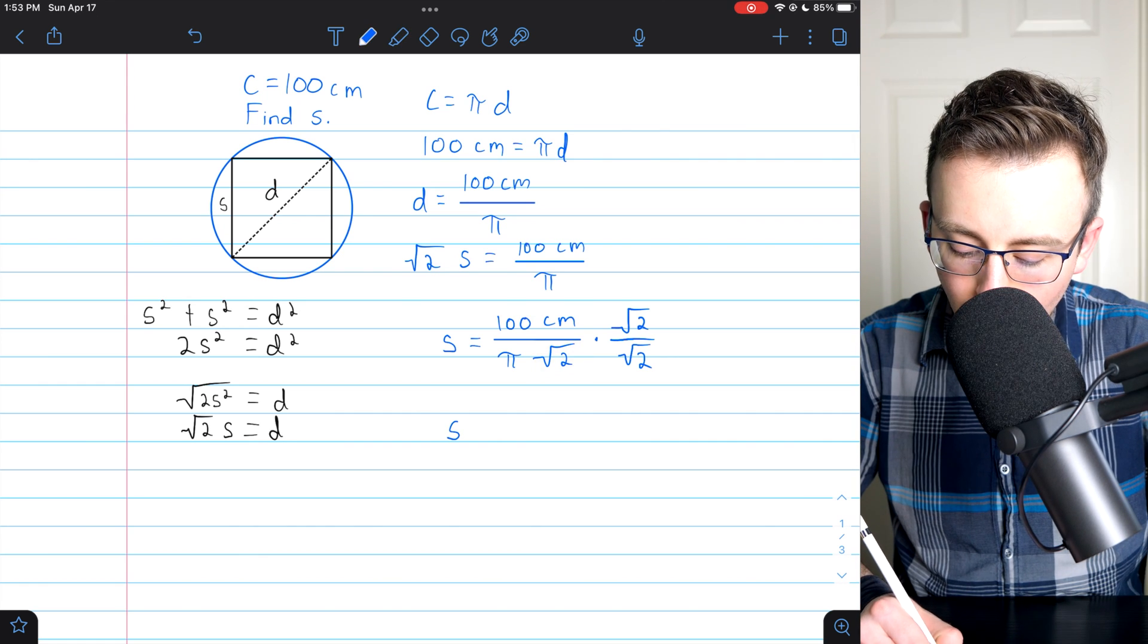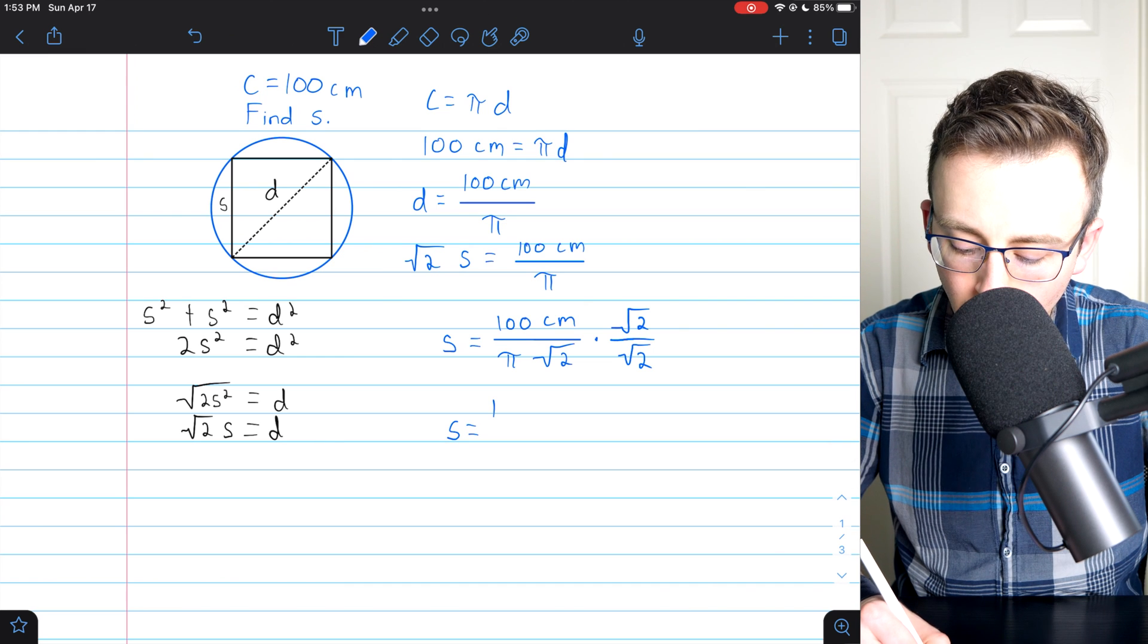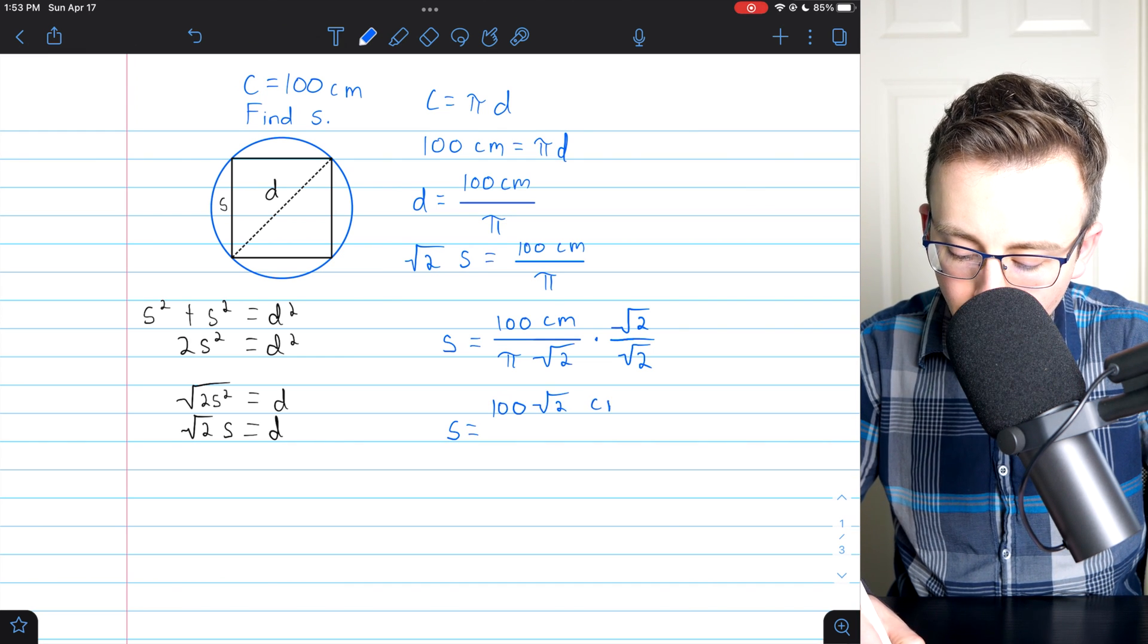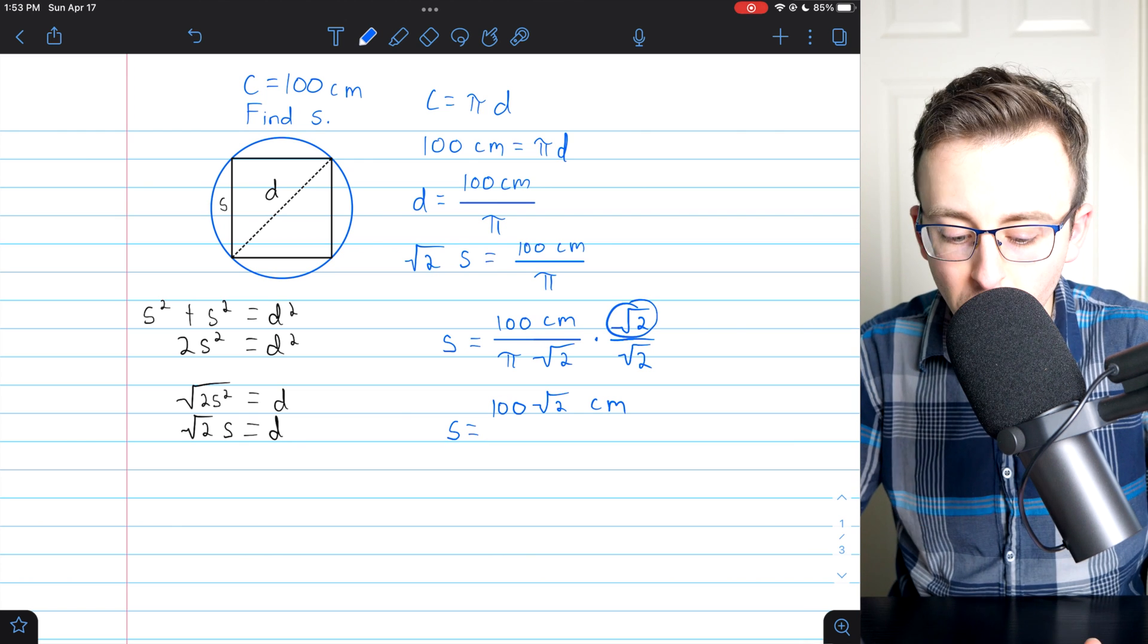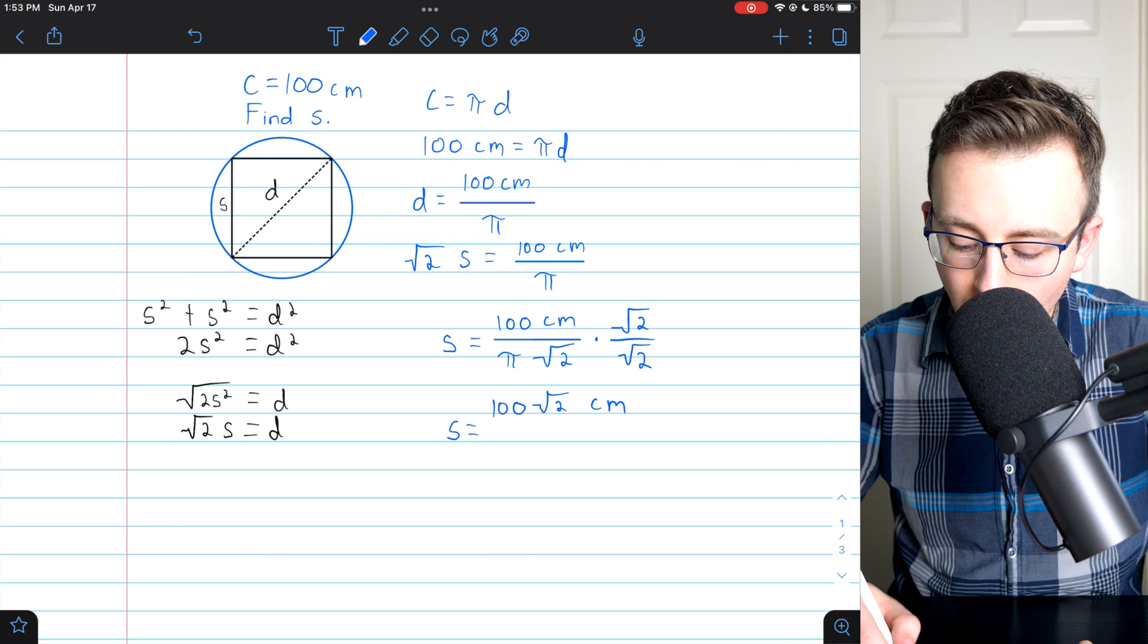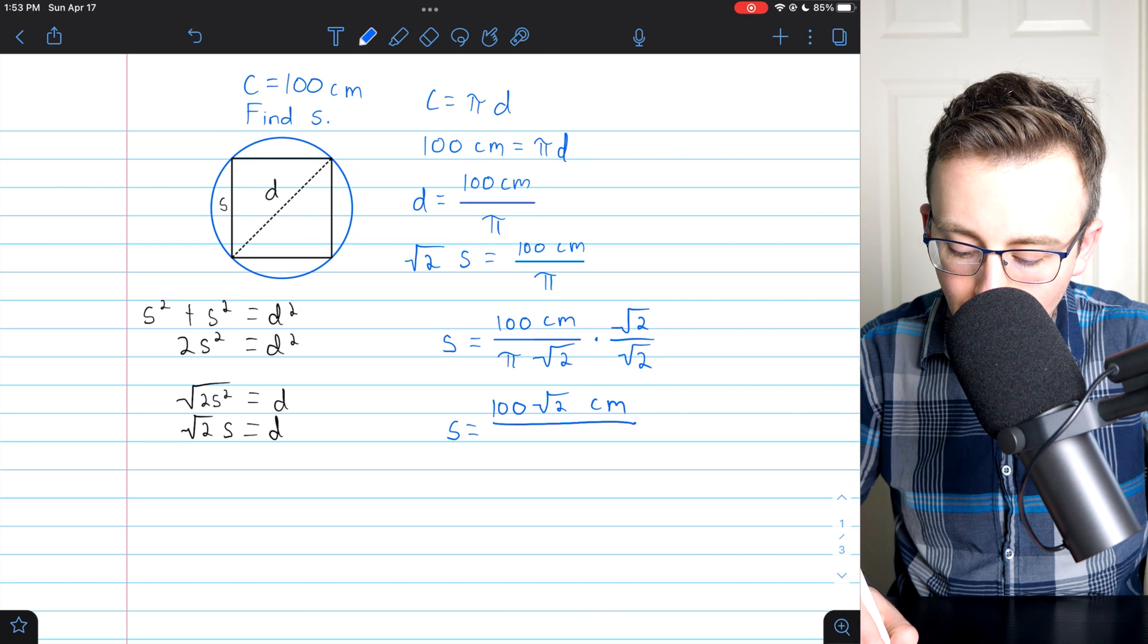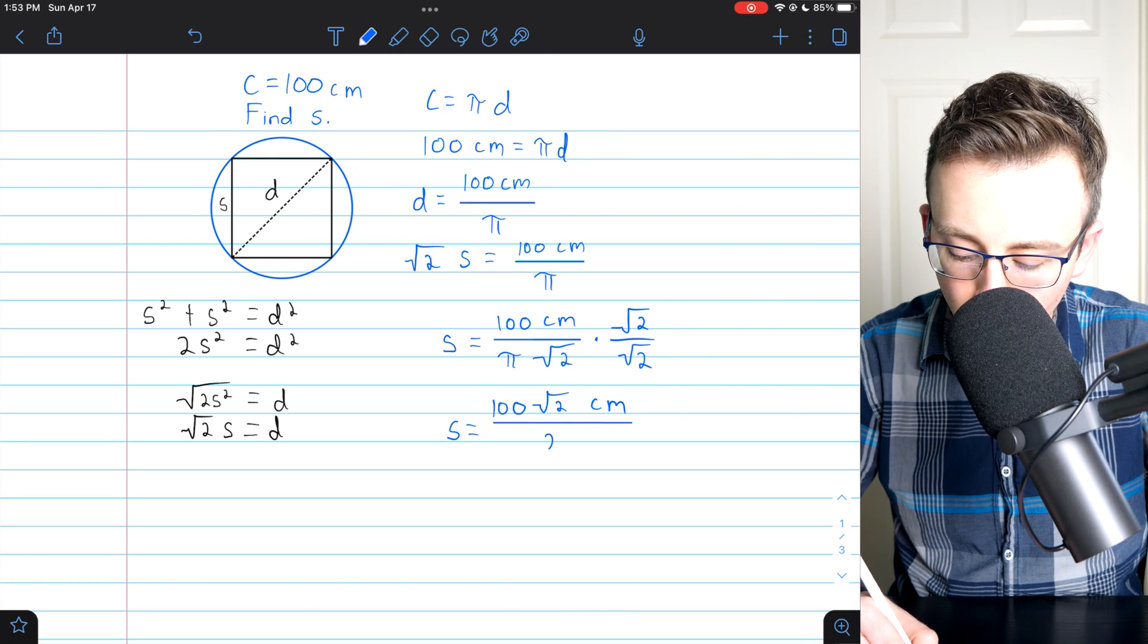This is going to leave us with s is equal to 100 square root of 2 centimeters, because we multiplied by root 2 in the numerator. In the denominator, root 2 times root 2 is just 2. So in the denominator, we are just left with 2 pi.